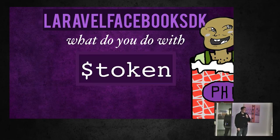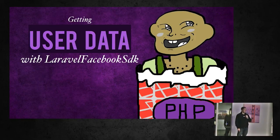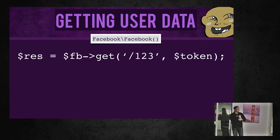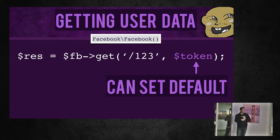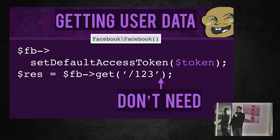I would store the access token in a session, but if you need to make requests on behalf of the user later on, you'll need to put it in a database. To grab user data: you make a GET request to the user's ID endpoint — note that the version prefix is not needed because the SDK automatically version-prefixes all URLs. You can send the token with each request, or use setDefaultAccessToken() so you don't have to pass it every time. Every subsequent request to Graph will fall back to that default access token.